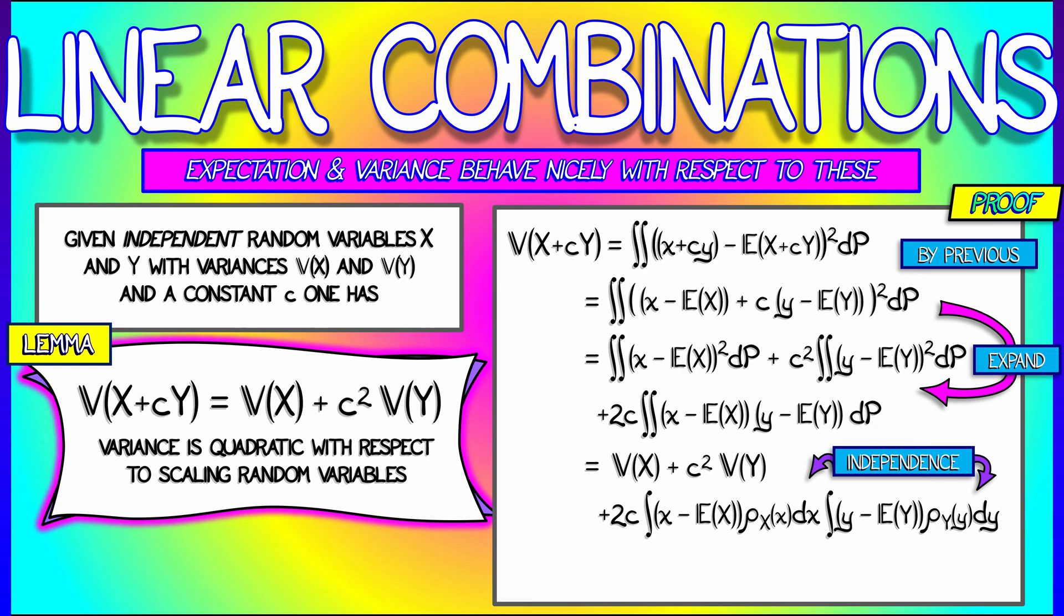But because of independence and a little bit of Fubini, we can pull out the marginal densities there and conclude that that third double integral, the one with the mixed X and Y terms, vanishes by definition of expectation and the fact that we have independence and can break it up into the product of these two integrals. In the end, that gives us our result—you get the variance of X plus c squared times the variance of Y.